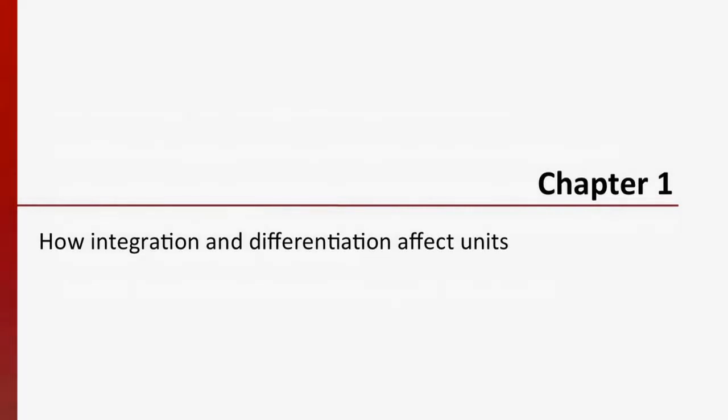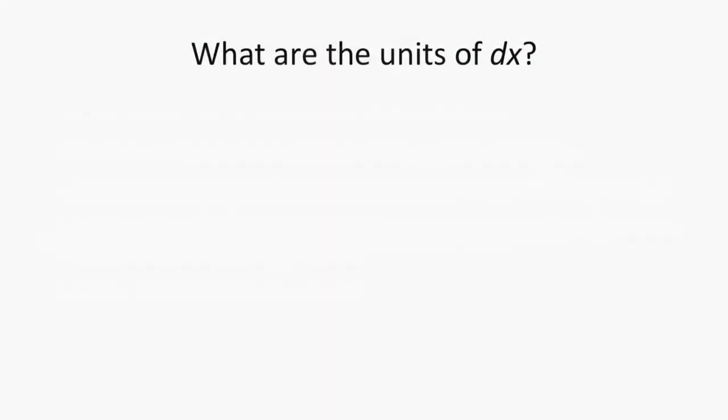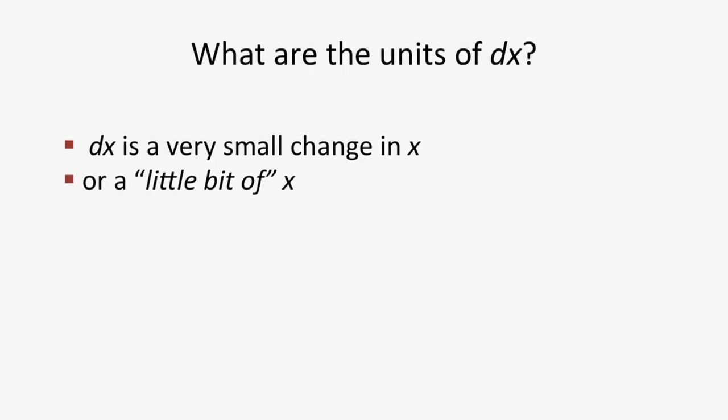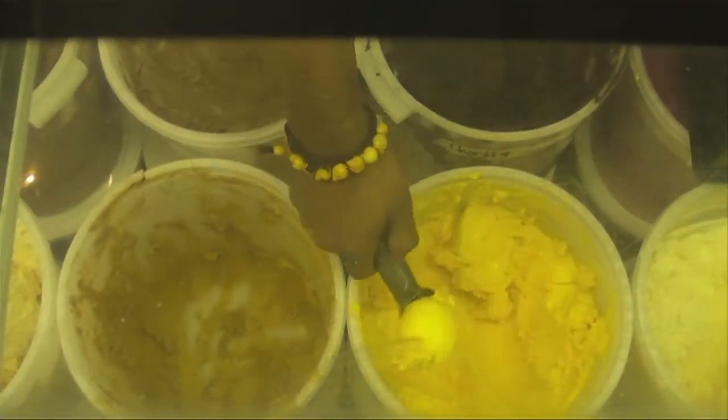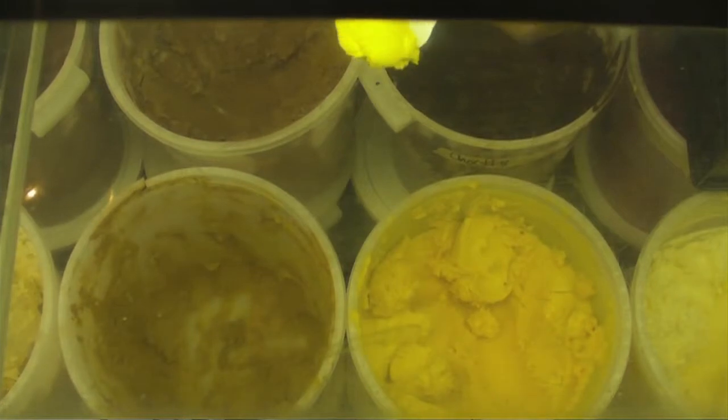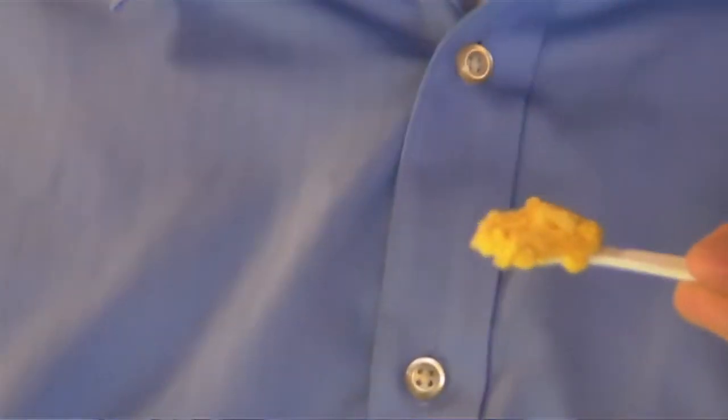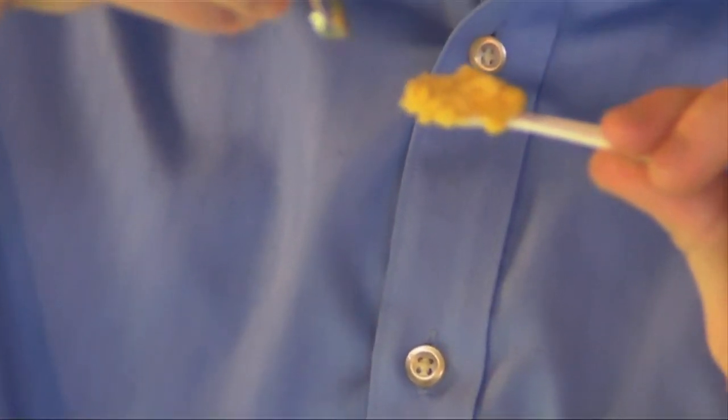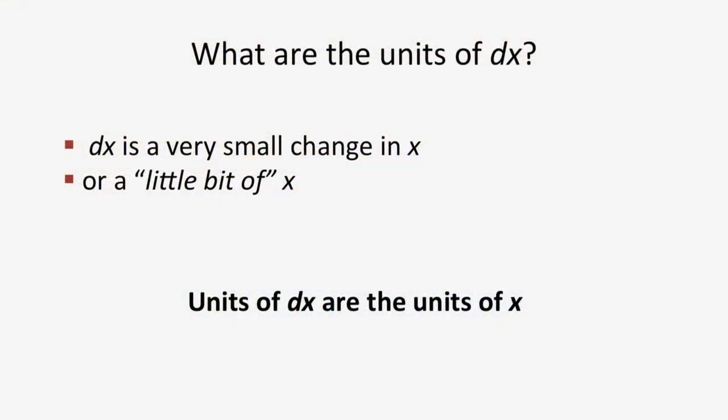Before we start the main example, let's discuss how integration and differentiation affect units. The first question is, what are the units of dx? You should think of dx as a very small change in x, or a little bit of x. Recall that a little bit of ice cream is still ice cream. So, the units of dx are precisely the units of x, and the d in dx is unitless.